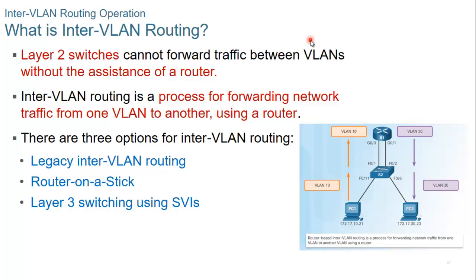What is inter-VLAN routing? Layer 2 switches cannot forward traffic between VLANs without the assistance of a router because routing is done in layer 3. So for a switch to forward traffic between different VLANs, it needs the assistance of the router. Inter-VLAN routing is a process for forwarding network traffic from one VLAN to another using a router.